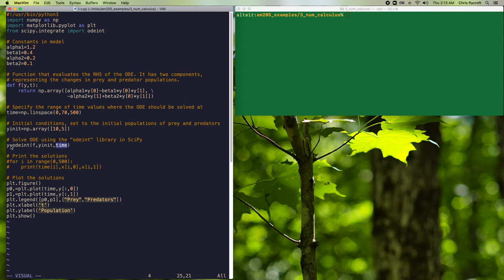And this function will pass back a numpy array that has two columns and 500 rows corresponding to our solution at the 500 time points that we requested.